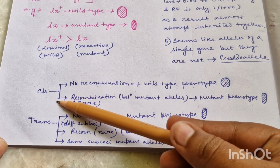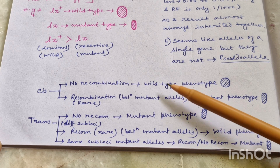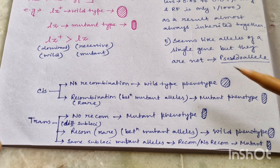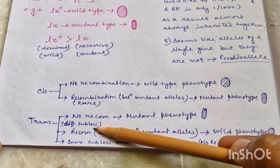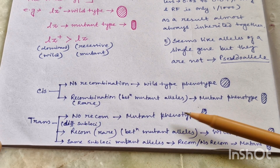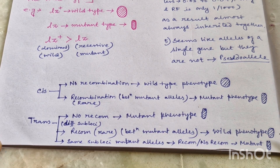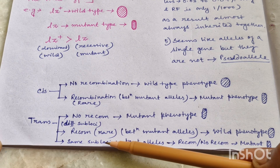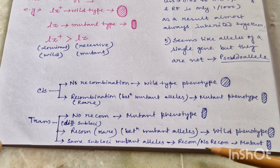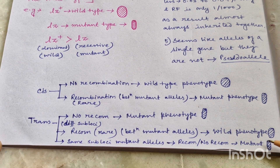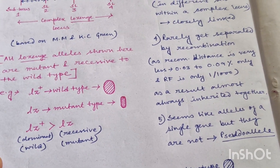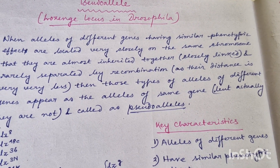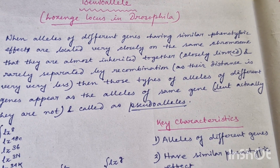In summary: in cis configuration with no recombination, the product will be wild type phenotype with normal eye shape. If recombination occurs between the mutant alleles, which is a rare event, then mutant phenotype or lozenge-shaped eyes will form. In trans configuration, if two mutant alleles are at different subloci and no recombination occurs, the phenotype will be mutant; if recombination occurs between the mutant alleles, wild type phenotype will be found. If the two mutations are at the same sublocus, no wild type product will be found in either case — only mutant lozenge-shaped eyes. I hope this video is clear. Thanks for watching and happy learning.